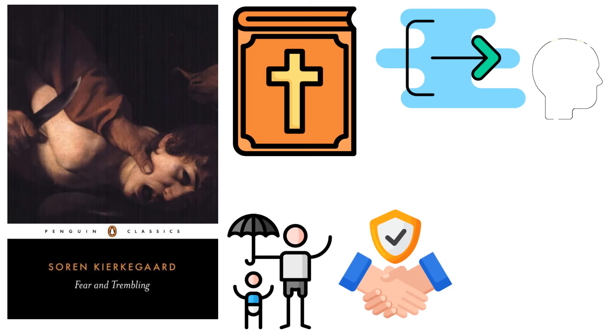Fear and Trembling is separated into two sections. In the first, Kierkegaard investigates Abraham's story. In the second, he develops a framework for studying Abraham's faith and asks questions about it.